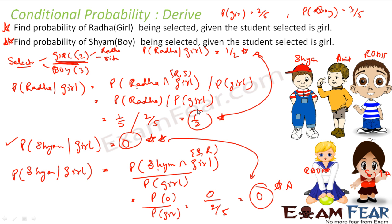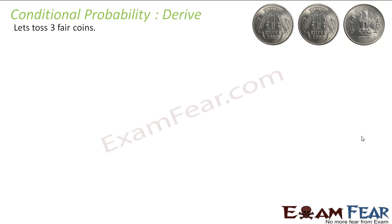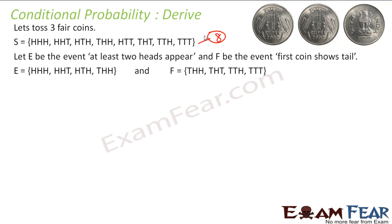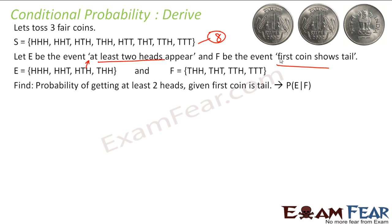These formulas are useful when we have larger questions where it is difficult to create such sets manually. For example, if you had to toss 3000 coins, you cannot write out all outcomes. So we use the formula. Let us take one more example: we toss a coin three times, giving a sample space of eight outcomes, where E is the event of getting two heads and F is the event that the first toss is a tail.